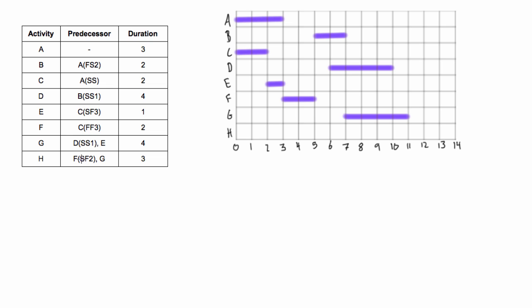Activity H also has to satisfy two things. It depends on F with a start-to-finish relationship of two. So we find the start of F, and H could finish two days after that - so that's one potential finish point, and with three days duration we count back three for one potential start. But H also depends on G with a regular finish-to-start relationship, so it can't start until G is done. Starting before G finishes would violate that constraint, so we start H where G ends, and with three days duration we go from eleven to fourteen.